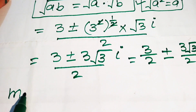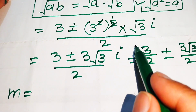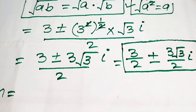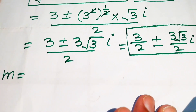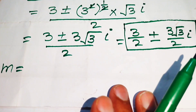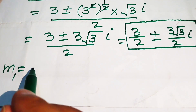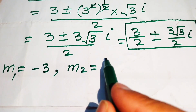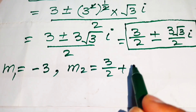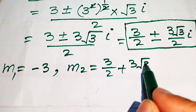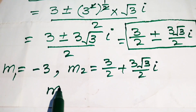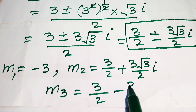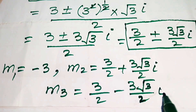Separating the fraction, we get 3/2 plus or minus (3 times square root of 3 / 2) times i. These are the two complex roots of the equation. So the three roots are: m₁ equals minus 3, m₂ equals 3/2 plus (3√3/2)i, and m₃ equals 3/2 minus (3√3/2)i.